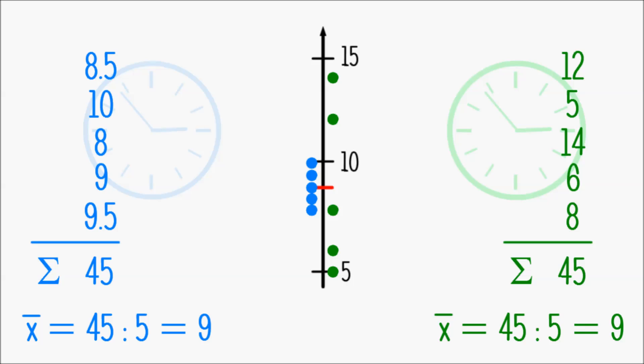In the illustration, we can see that Patrick's working hours are all pretty close to the average of 9, while Anna's working hours are distributed across a much wider range.